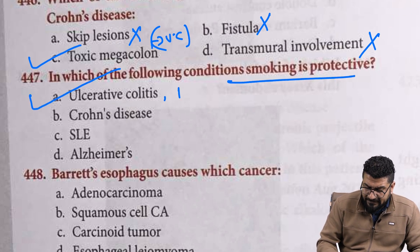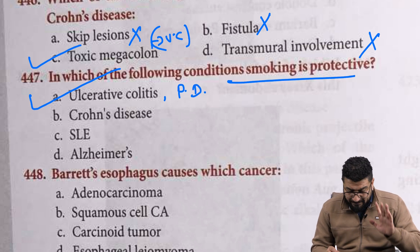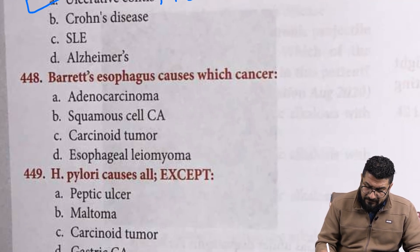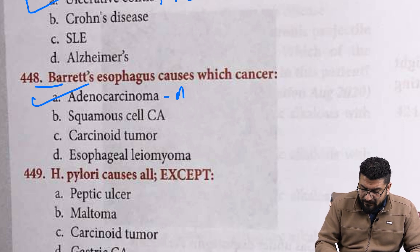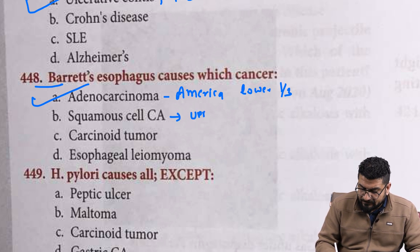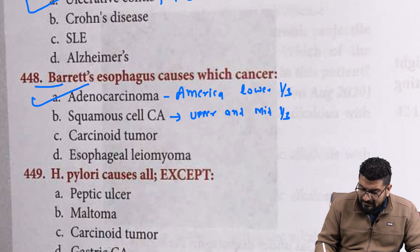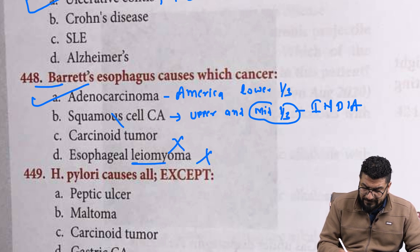Smoking is protective in ulcerative colitis. Adding a few more things: in Parkinson's disease, smoking is also considered protective; in Alzheimer's, it is now considered dangerous (previously was thought protective). Barrett's esophagus causes adenocarcinoma — A for adeno, A for America, so it is the most common cancer in the US, with the most common site being the lower one-third. Squamous cell carcinoma is more common in the upper and middle one-third, with the middle one-third being the most common site in India. Carcinoid is a serotonin-secreting tumor; leiomyoma is a benign tumor of the esophagus.